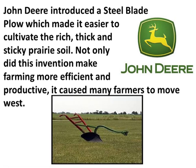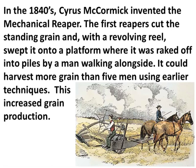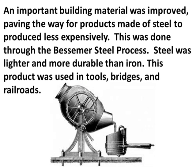John Deere introduced a steel blade plow, which made it easier to cultivate the rich, thick, and sticky prairie soil. Not only did this make farming more efficient and productive, it caused many farmers to move west. In the 1840s, Cyrus McCormick invented the mechanical reaper. The first reapers cut standing grain and swept it onto a platform where it was raked into piles — it could harvest more grain than five men using earlier techniques, increasing grain production. An important building material was also improved through the Bessemer steel process, making steel products less expensive. Steel was lighter and more durable than iron and was used in tools, bridges, and railroads.